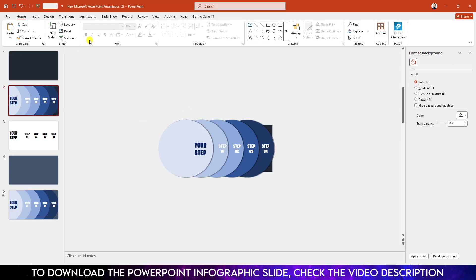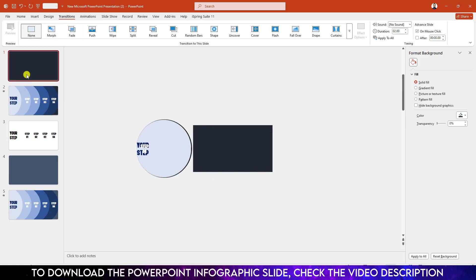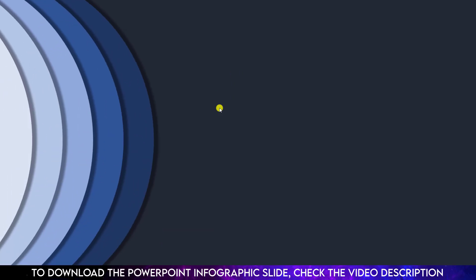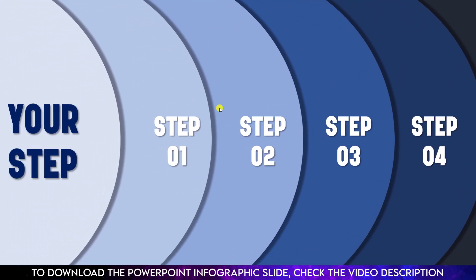Go to the second slide, go to Transition, and apply Morph. Go to the first slide and watch the slideshow — here you will see this looks very beautiful. Hope you found this video helpful. If you like this video, please share it with your friends and family, and don't forget to subscribe. Thank you.